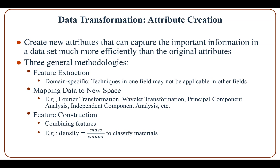There are three general methodologies for attribute creation. With feature extraction, this method is domain-specific — techniques in one field may not be applicable to others; for example, techniques in image processing may not apply elsewhere. The second is mapping data to a new space using transformations such as Fourier transformation, wavelet transformation, principal component analysis, or independent component analysis to reveal more information for data mining. With feature construction, features are combined to create new features — for example, density can be created from mass and volume to classify materials.